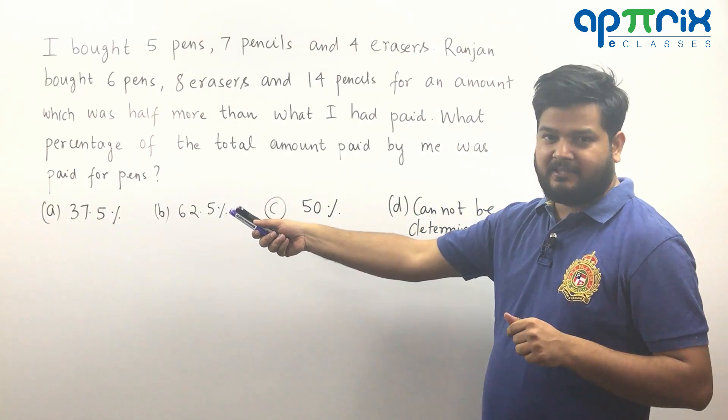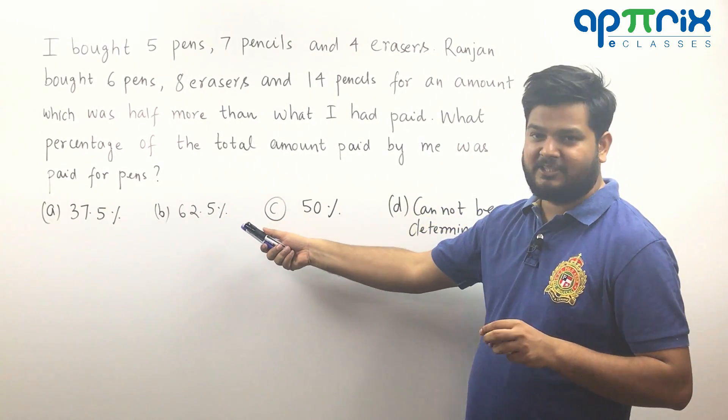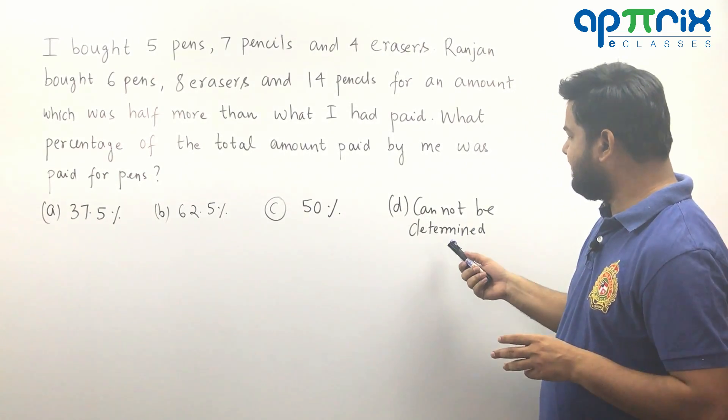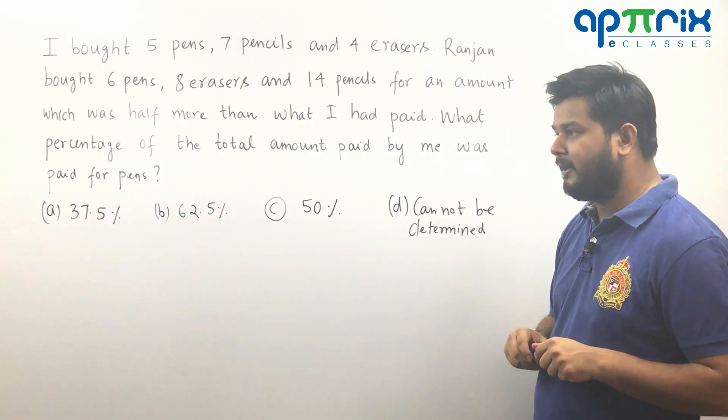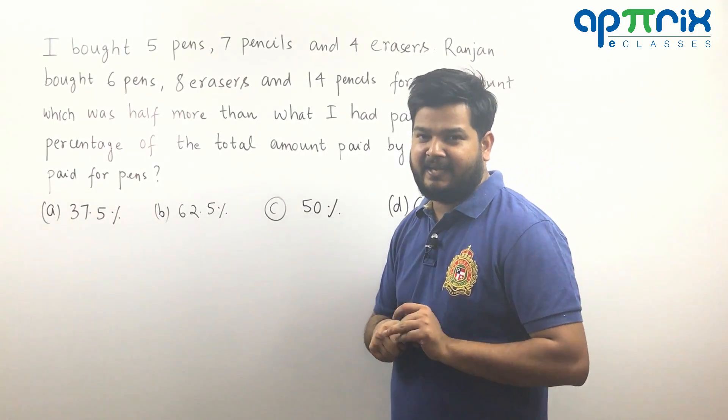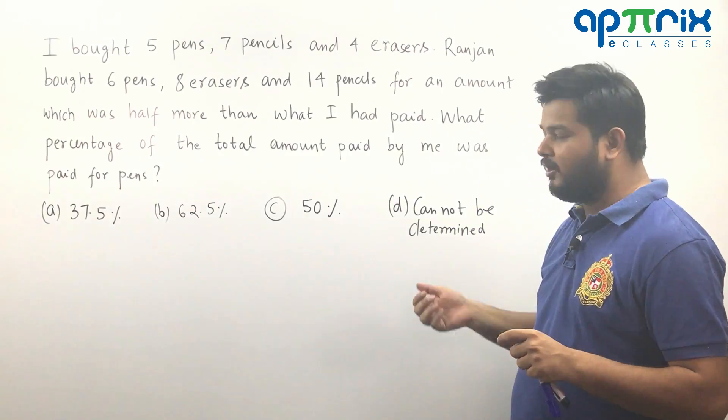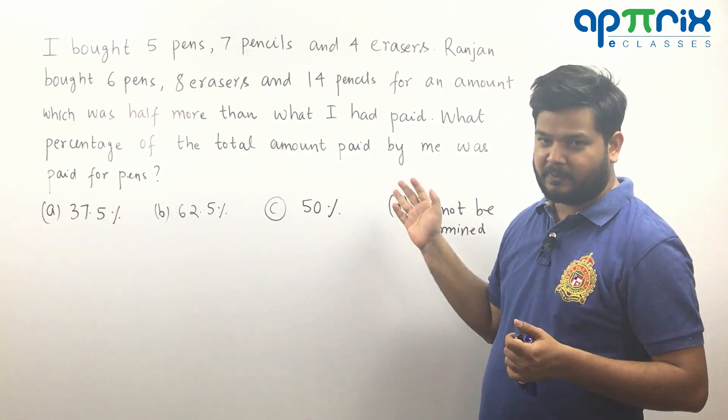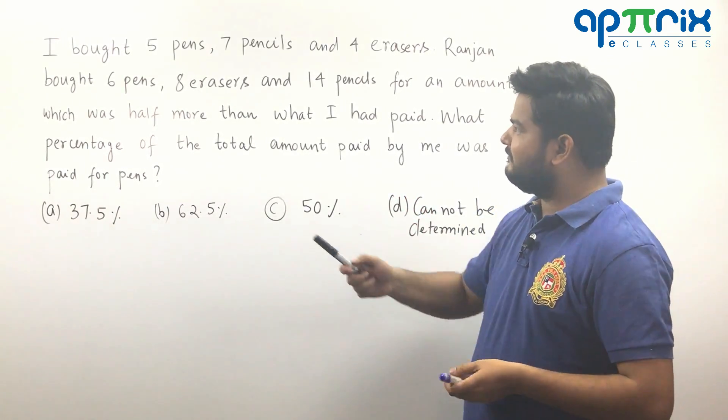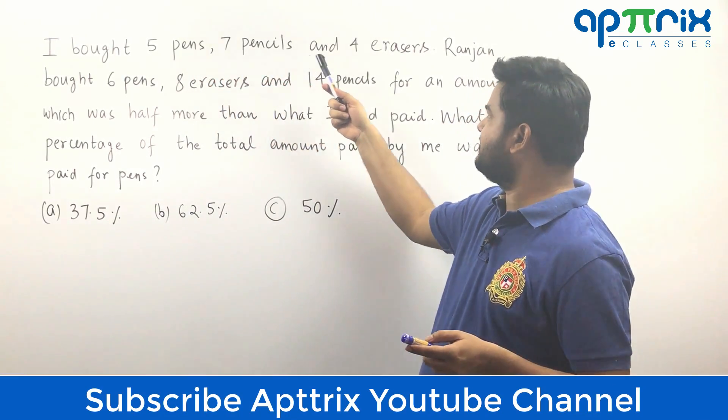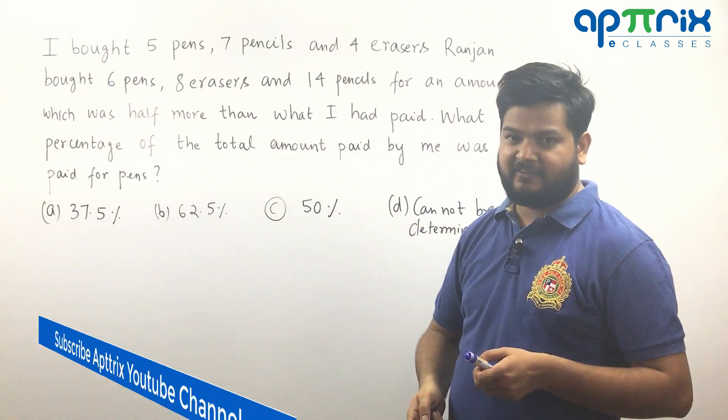You look at the options: A 37.5%, B 62.5%, C is given to be 50% and D is cannot be determined. Now essentially let's understand that there are many students who are prompted to mark cannot be determined immediately while they read the question and what they say is that we are having three variables like cost price of pen, cost price of pencils and cost price of erasers. Three variables, right?